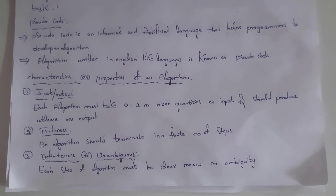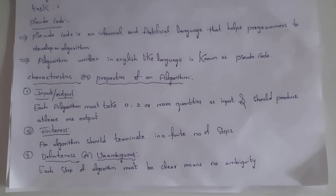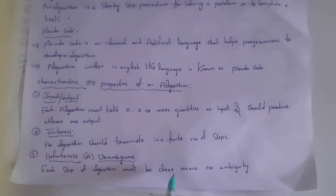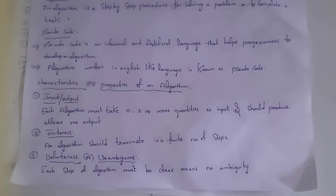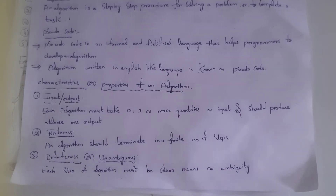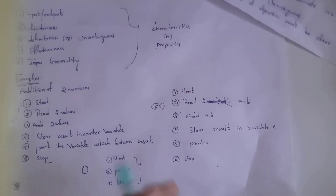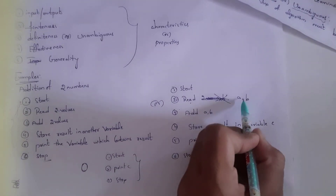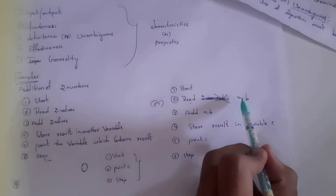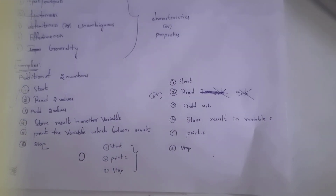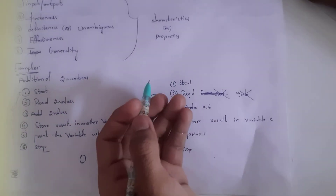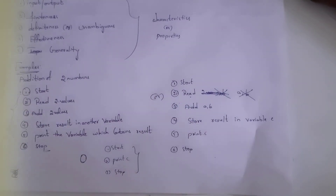The third property is Definiteness, also called Unambiguous. Each step of an algorithm must be clearly understandable — there should be no ambiguity. For example, writing 'Read A, B' is clear because I am reading two values. But if I write only 'Read' without specifying what to read, it becomes ambiguous — you wouldn't know which variable to read.